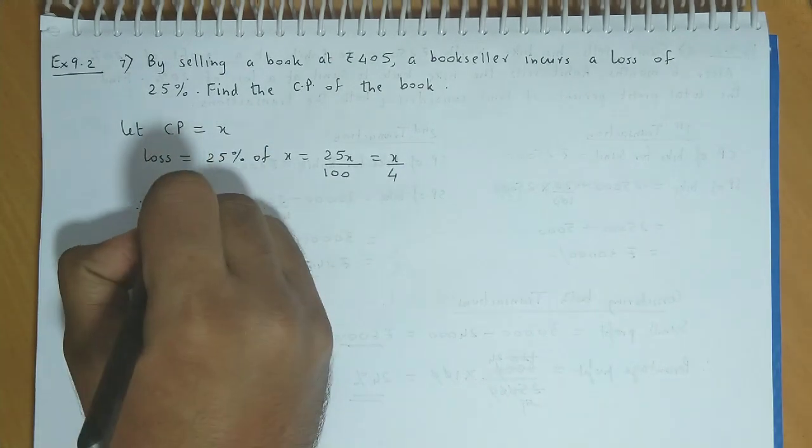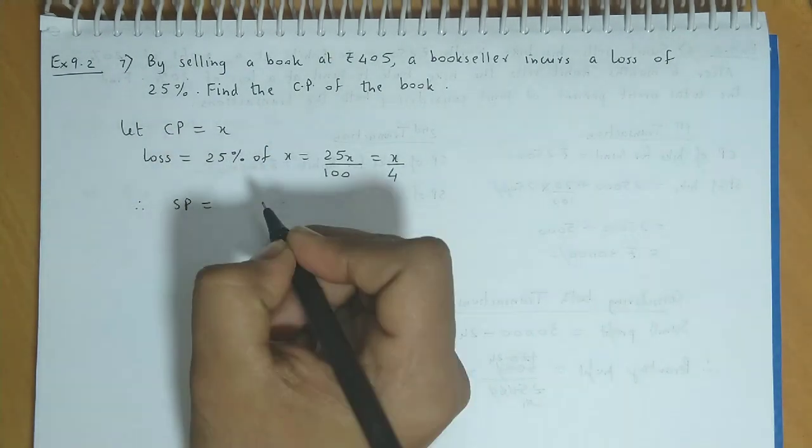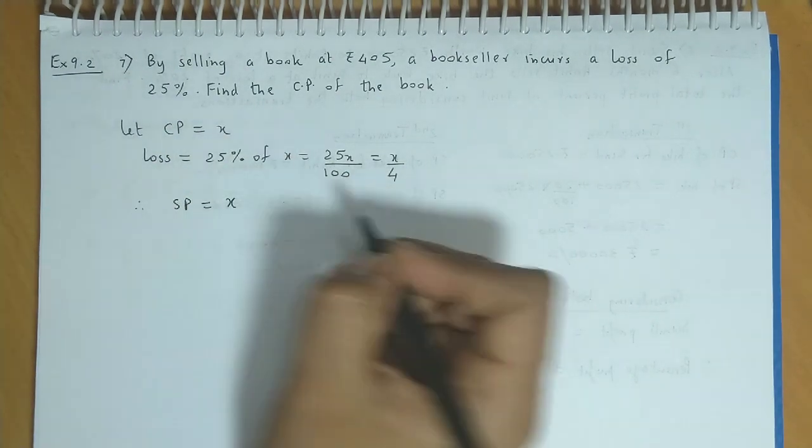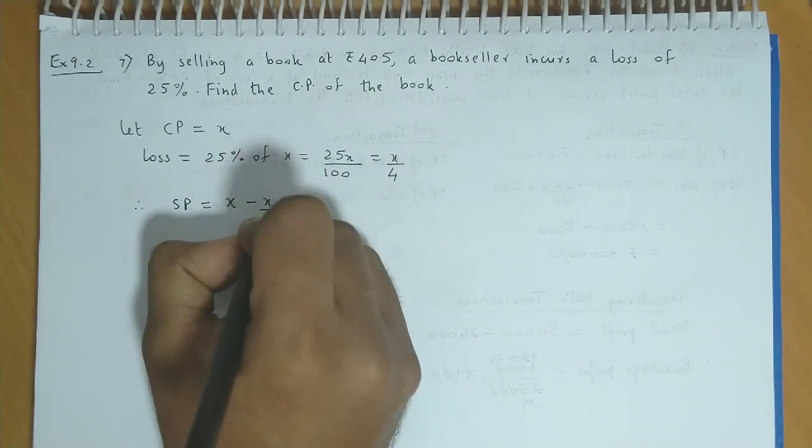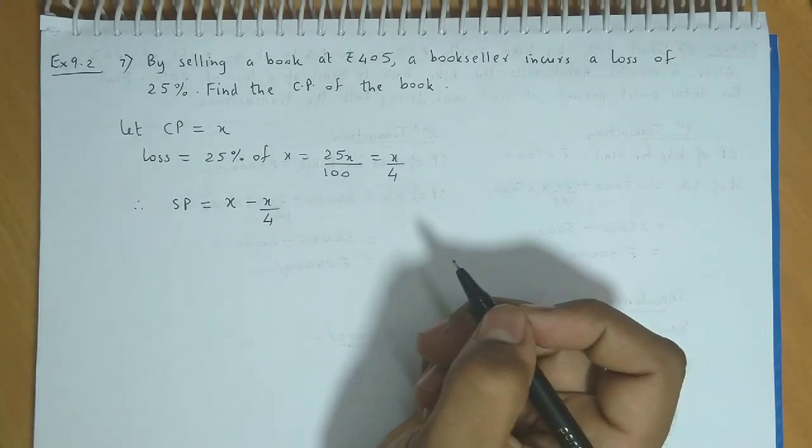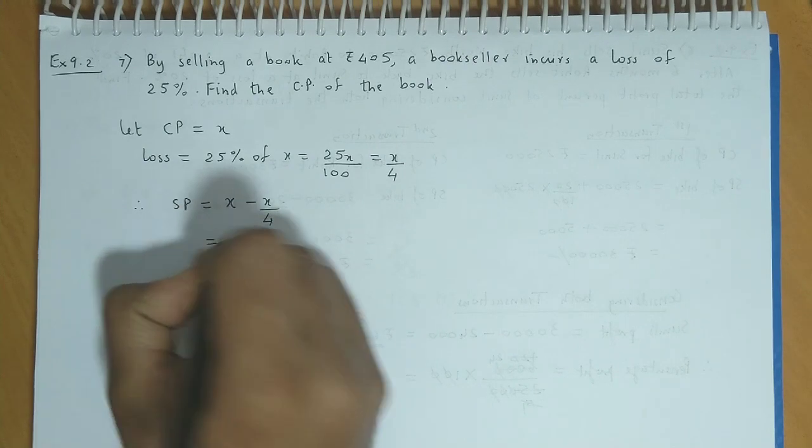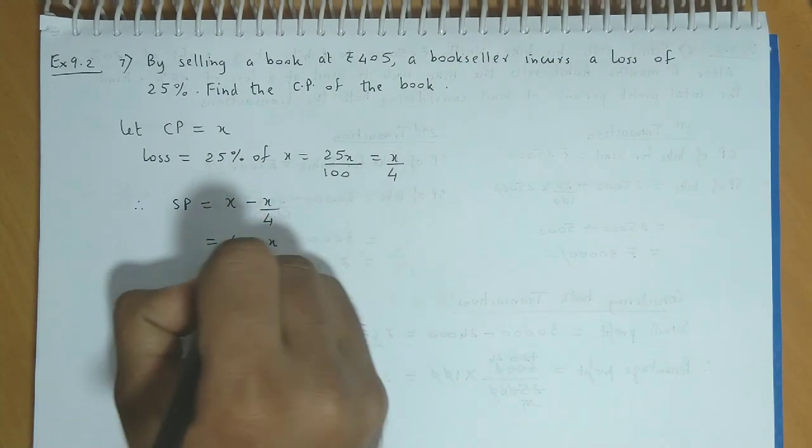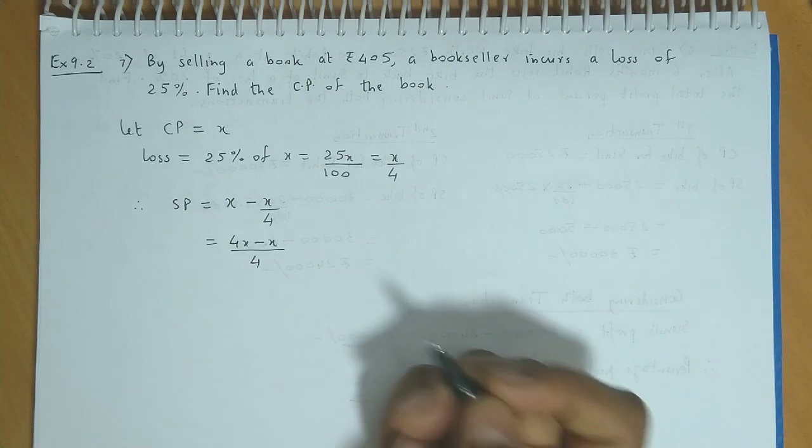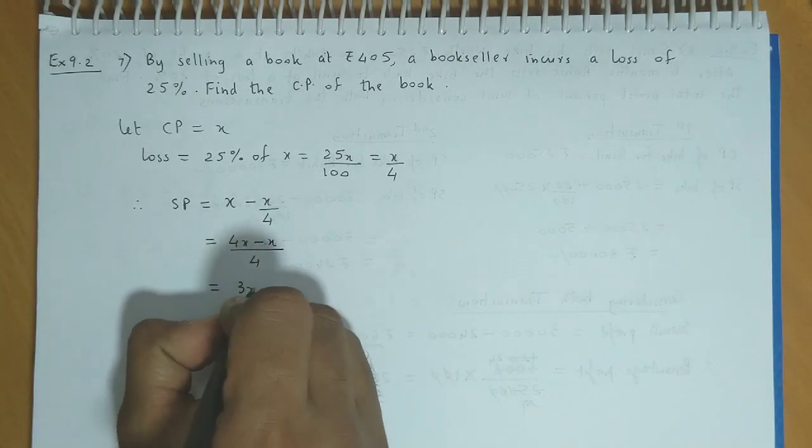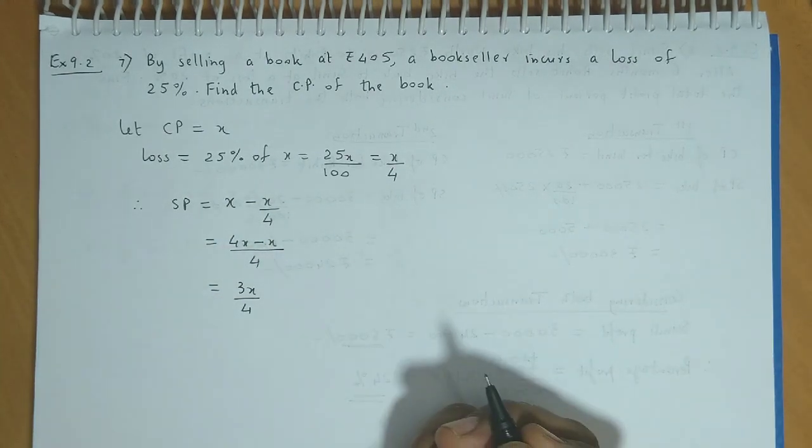Therefore, the selling price is equal to x minus x/4. If we simplify, we have (4x - x)/4 which is equal to 3x/4.